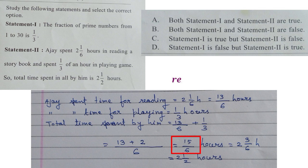How to convert it into mixed fraction? 15 divided by 6: quotient is 2, remainder is 3. So the new fraction is 2 3 by 6 hours.